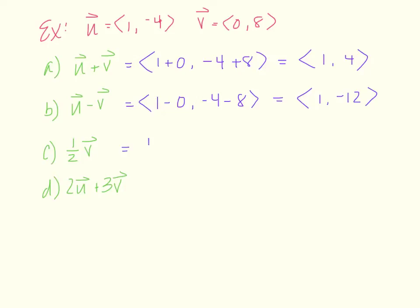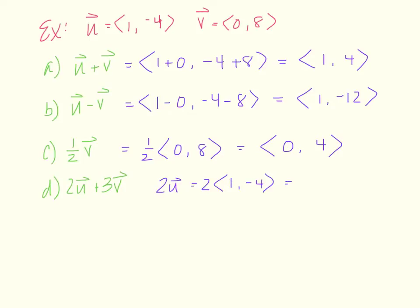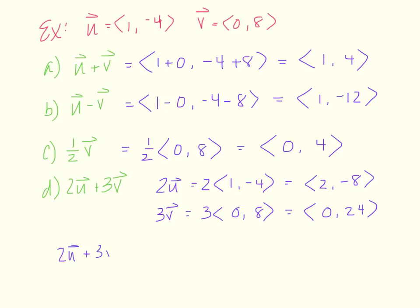For scalar multiplication, one half times vector v = (0, 8): distribute the one half, giving (0, 4). For 2u plus 3v: first find 2u = 2 times (1, -4) = (2, -8). Then 3v = 3 times (0, 8) = (0, 24). Adding those together: 2 plus 0 and negative 8 plus 24 gives the vector (2, 16).